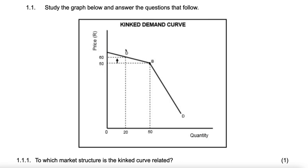If the margin was the same — say unitary — a 10 rand increase would cause a 10 unit drop, and that would be equal. But if a 10 rand increase only causes a 2 unit drop, that would be the case if demand was inelastic or relatively inelastic.